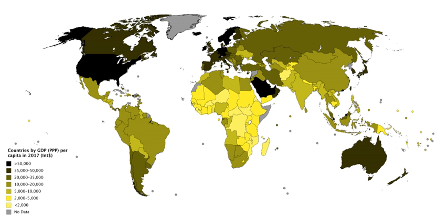The level of GDP in countries may be compared by converting their value in national currency according to either the current currency exchange rate or the purchasing power parity exchange rate. Current currency exchange rate is the exchange rate in the international foreign exchange market. Purchasing power parity exchange rate is the exchange rate based on the purchasing power parity of a currency relative to a selected standard — usually the United States dollar. The only way to directly realize this rate is to sell an entire CPI basket in one country, convert the cash at the currency market rate, and then rebuy that same basket of goods in the other country with the converted cash.